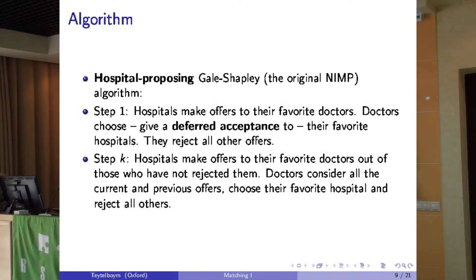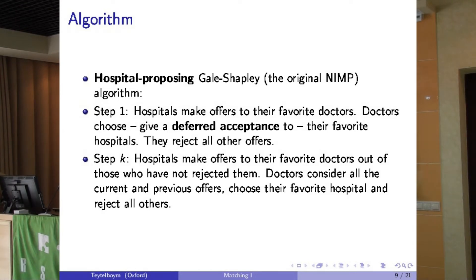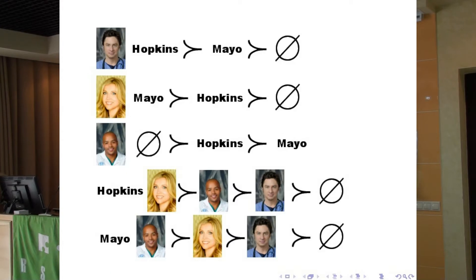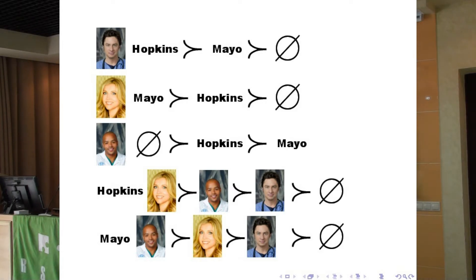But if you've accepted a hospital, remember it's deferred - it's not a final acceptance, just a temporary acceptance. If a better offer comes later, you can reject one of the existing offers you have. Here is JD: he prefers Hopkins to Mayo to not working. Elliot prefers Mayo to Hopkins to not working. And Turk doesn't want to work - he prefers not working, would rather be at Hopkins if he has to, and doesn't want to be at Mayo at all. One of the results Gale and Shapley proved was that no matter what preferences the hospitals and doctors have, there will be a stable outcome.